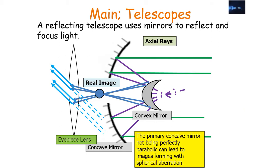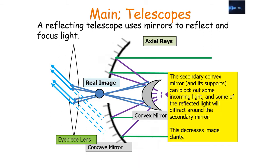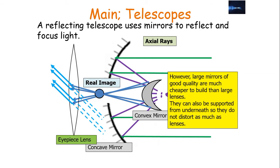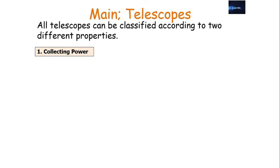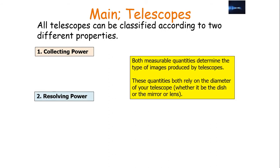The primary concave mirror not being perfectly parabolic can lead to images with spherical aberration, whilst the secondary convex mirror and its support can block out some of the incoming light, and some reflected light will diffract around the secondary mirror — both effects decrease image clarity. On the positive side, large mirrors of good quality are much cheaper to build than large lenses and can be supported from underneath, so they don't distort as much. All telescopes can be classified according to two properties: collecting power and resolving power, both of which depend on the diameter of the telescope.